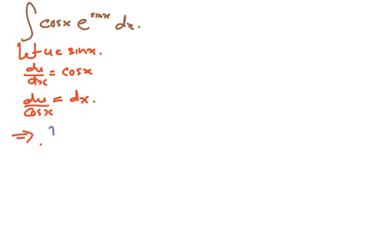Substitute cos x which is already existing, and e to the power of sine x, and dx is actually du over cos x. When I cancel these two...